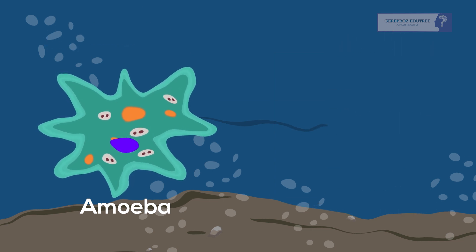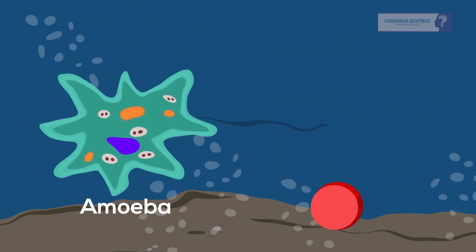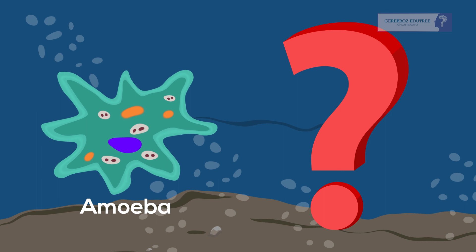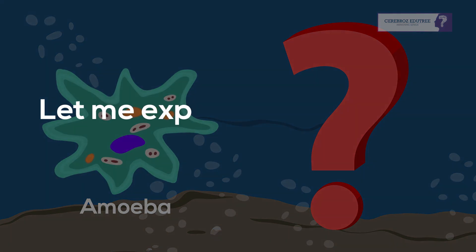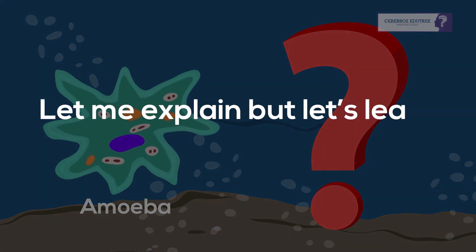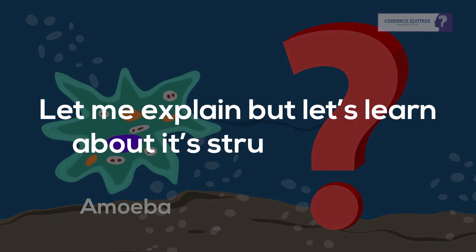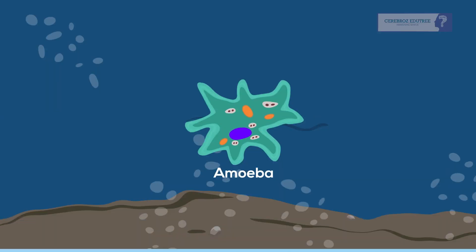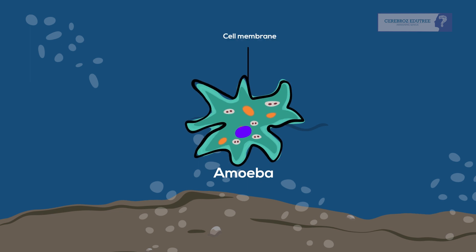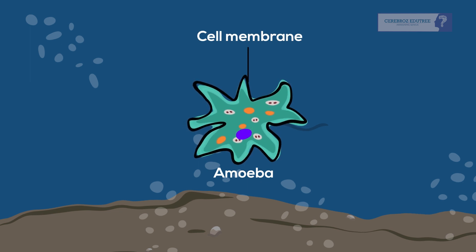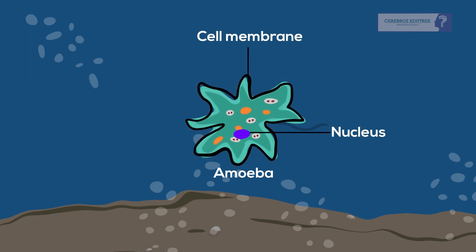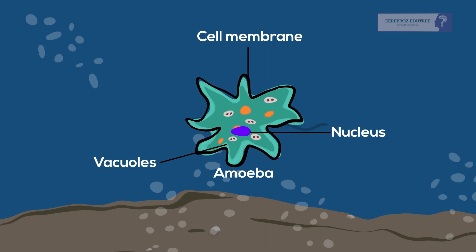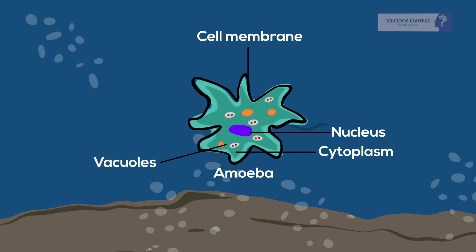You might be wondering, how does it do that? Let me explain, but let's learn about its structure first. Amoeba has a cell membrane, a rounded, dense nucleus, and many small bubble-like vacuoles in the cytoplasm.